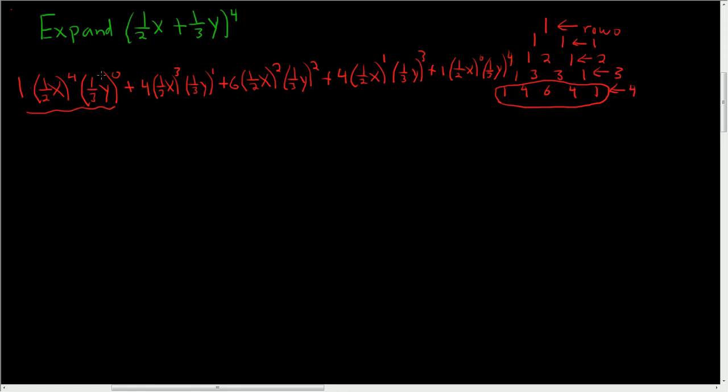Now it's usually better just to clean this all up in one step. So the first term, it's 1 half, and it's being raised to the 4th power. So 2 to the 4th is 16. So 1 over 16 x to the 4th. And that's 1. Anything to the 0 power is 1.